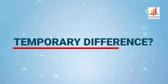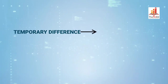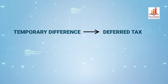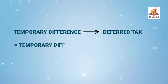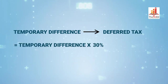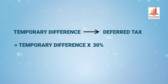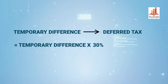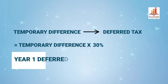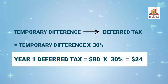What about the temporary difference? Well, it will lead to the creation of deferred tax. This deferred tax amount is calculated each year by multiplying the temporary difference by the applicable tax rate of 30%. In the case of year one, the deferred tax is equal to $80 multiplied by 30%, or $24.